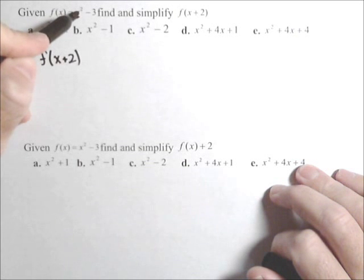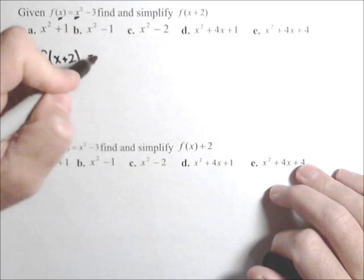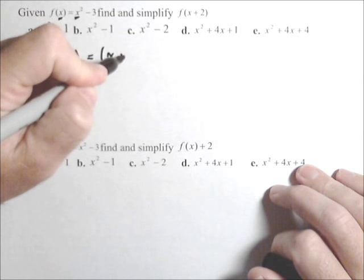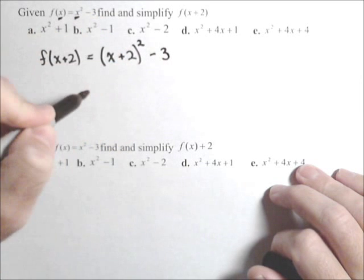There's only one x on this right-hand side. Any place there was an x, we would have to replace it with the x plus two. So this is x plus two replacing the x, so that's quantity squared minus three.